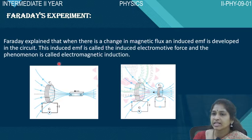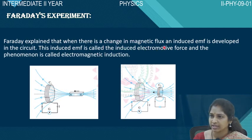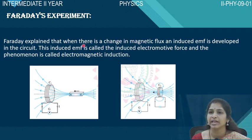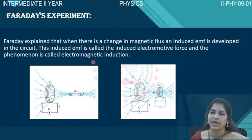In Oersted's experiment, when there is a change in current, magnetic field is produced. But in Faraday's experiment, when there is a change in the magnetic field, there will be a change in the magnetic flux. When there is a change in the magnetic flux, an induced EMF is developed in the circuit. This induced EMF is called induced electromotive force, and this phenomenon is called electromagnetic induction.